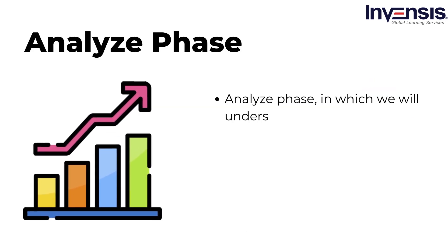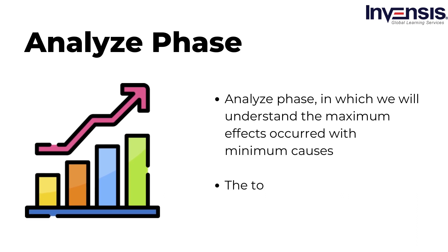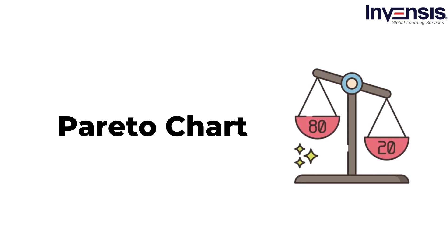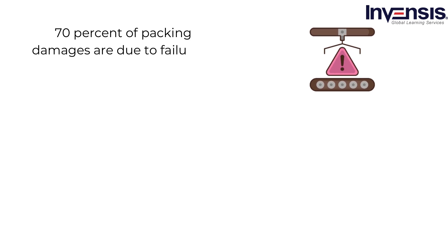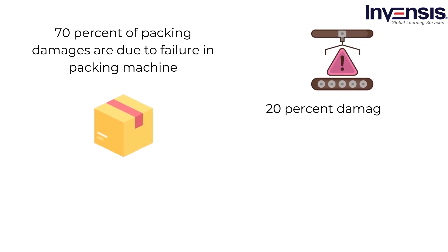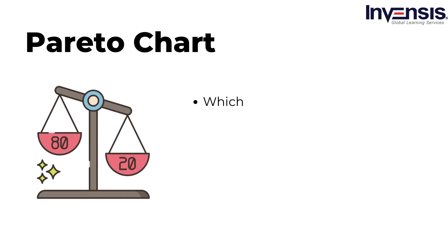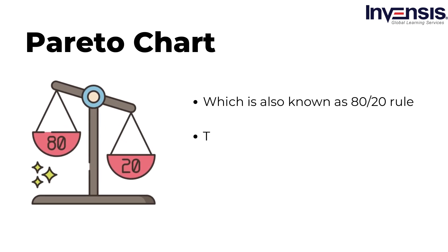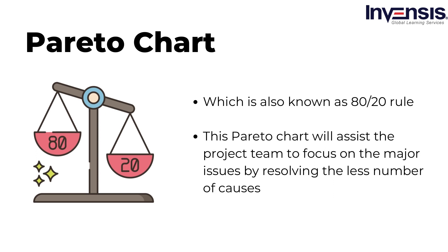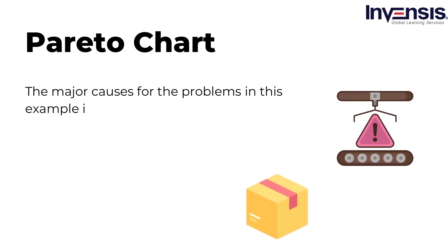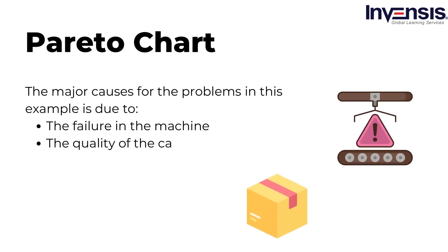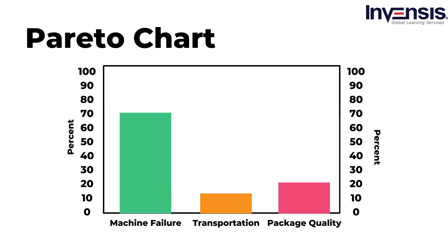In the analyze phase, we understand the maximum effects with minimum causes using the Pareto chart. For this problem: 70% of packing damages are due to failure in the packing machine, 20% are due to the quality of cardboard, and 10% are due to transportation of deliverables after packing. The Pareto chart, also known as the 80-20 rule, assists the project team in focusing on major issues by resolving fewer causes. The chart clearly shows the major cause is the damaged packing machine.